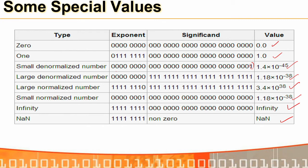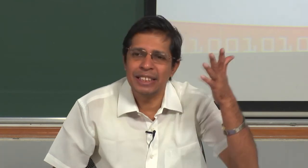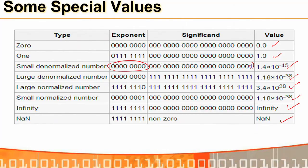Numbers that cannot be represented even as denormalized have exponent=0 and the number is stored directly. The largest and smallest normalized numbers, infinity (exponent all 1s, mantissa=0), and NaN — not a number (exponent all 1s, mantissa nonzero) — form the 6 special-value combinations for single precision, which can be extended to double.